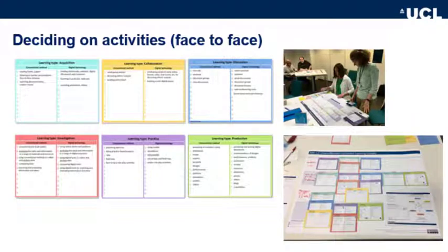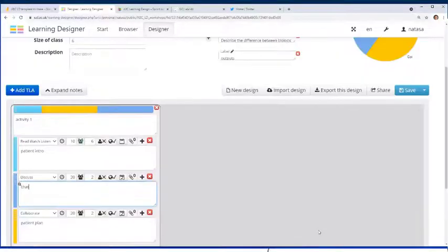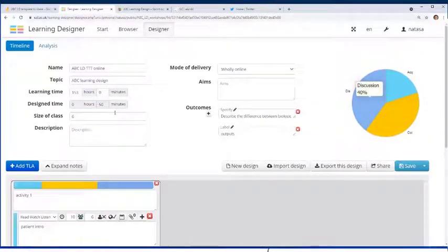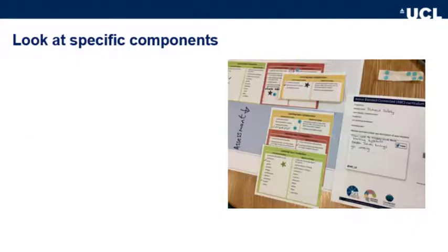When it comes to deciding on activities, in the face-to-face version we use the cards — on the back you can select or even write in your own activities representing each type of learning. In the online version, we use Learning Designer, another UCL tool, which is more precise in specifying the type of activities, their length, number of students, synchronous/asynchronous, online/offline, teacher presence, and so on. Importantly, you can export the report into Word or even directly into Moodle itself.